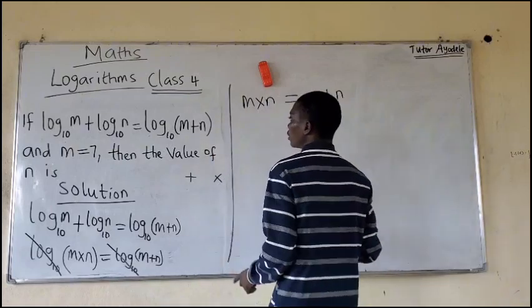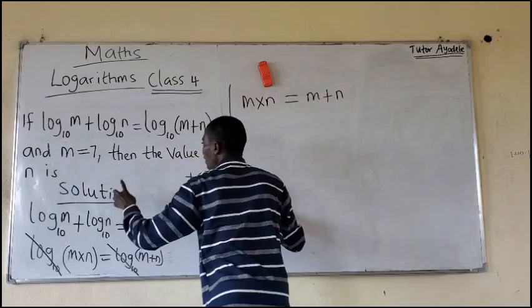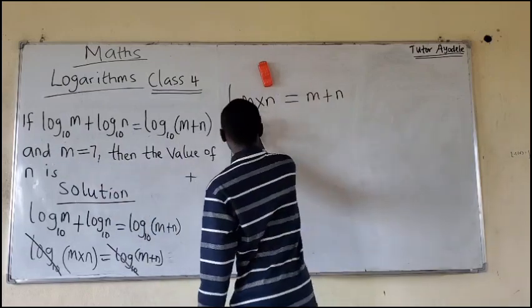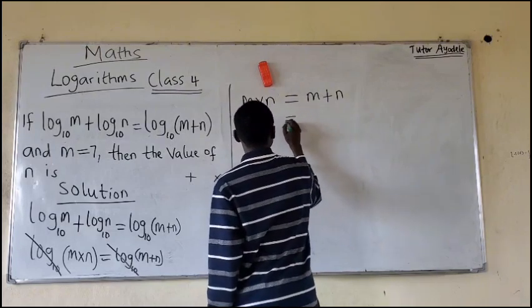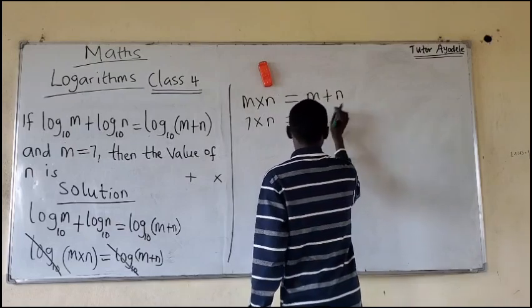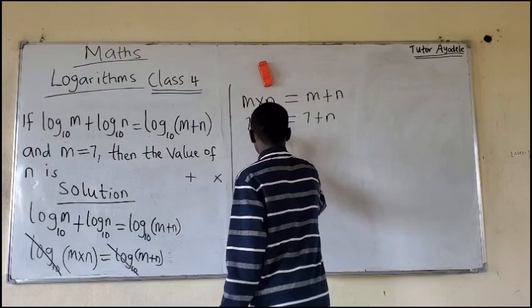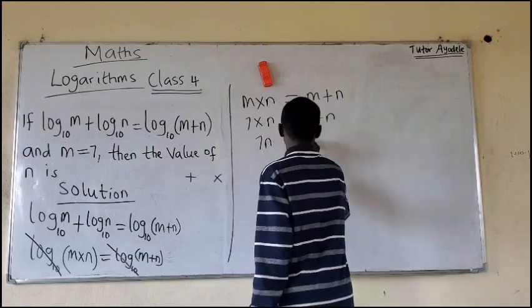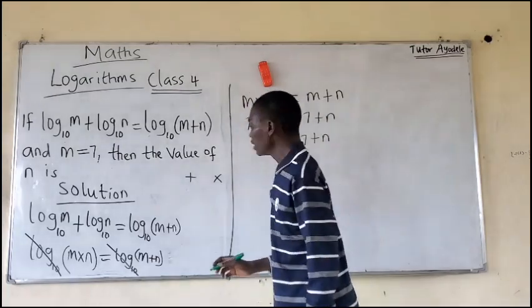So recall, remember that M equals 7. So let's replace M with 7. It will be 7 times N equals 7 plus N.